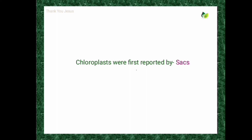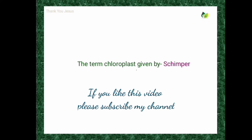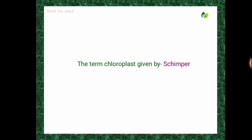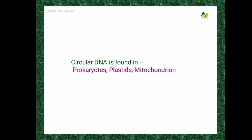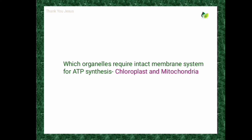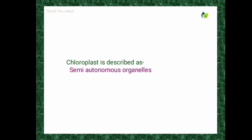Now let's cover competitive exam questions. Chloroplasts were first reported by Sachs. The term 'chloroplast' was given by Schimper. Photophosphorylation occurs in plastids. Organelles called energy transducers are chloroplasts and mitochondria. Circular DNA is found in prokaryotes, plastids, and mitochondria. Organelles requiring an intact membrane system for ATP synthesis are chloroplasts and mitochondria. Chloroplasts are described as semi-autonomous organelles.